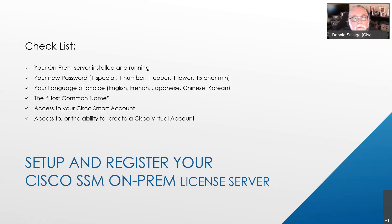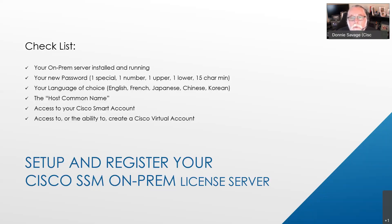As a checklist, we've got a couple items we need to make sure we have. Number one, an installed, up and running on-prem license server. You'll also need to think about a password — minimum 15 characters, at least one special, upper, lower, and a number. You can use the password from the installation or choose a separate one for the user interface as opposed to shell access. The choice is up to you and will be based largely on your InfoSec policy.